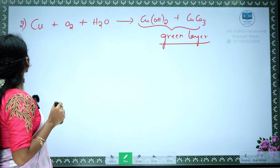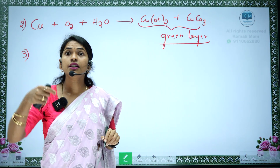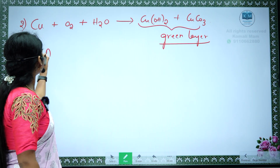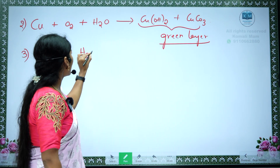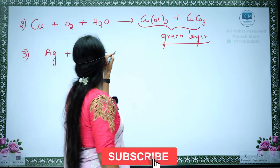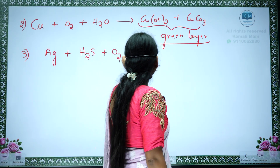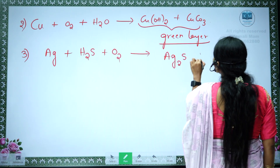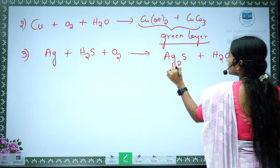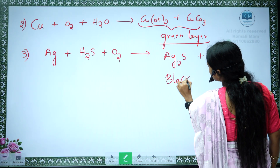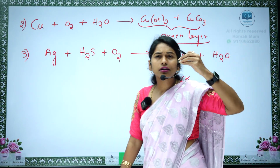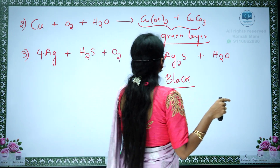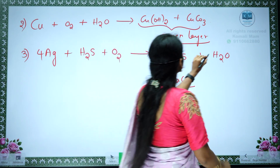You can also observe silver objects — they turn black upon corrosion. Silver also undergoes corrosion. Silver objects react with the hydrogen sulfide present in the atmosphere and with oxygen present in the air, and convert into a black colored substance called Ag2S, and water is formed. So Ag2S is a black colored substance — a black color layer — and that silver object slightly turns black because of this reaction. Balancing by keeping 2 here — 2 oxygens are there.